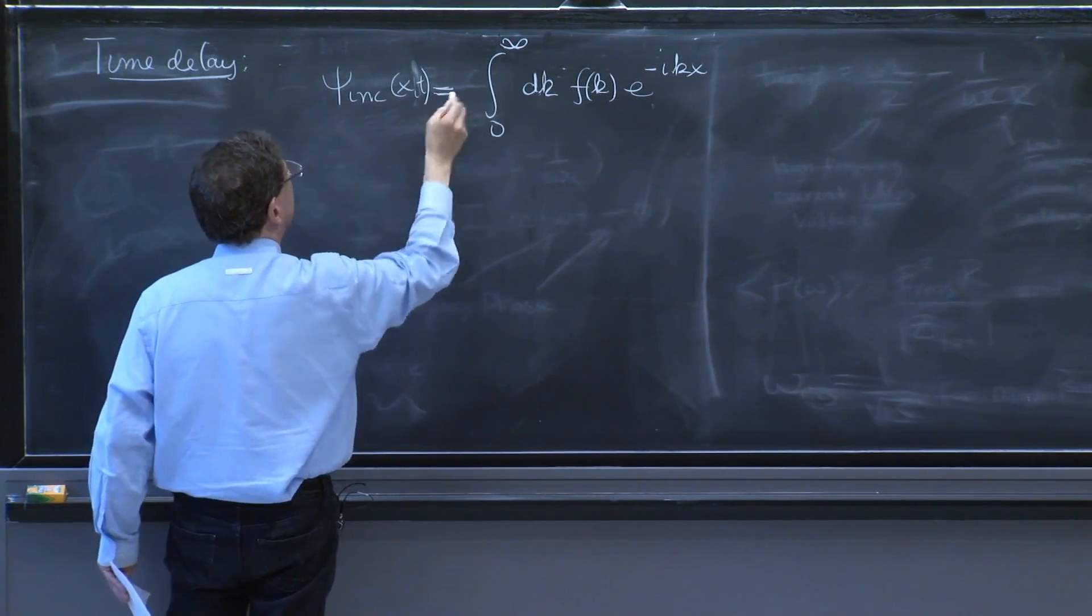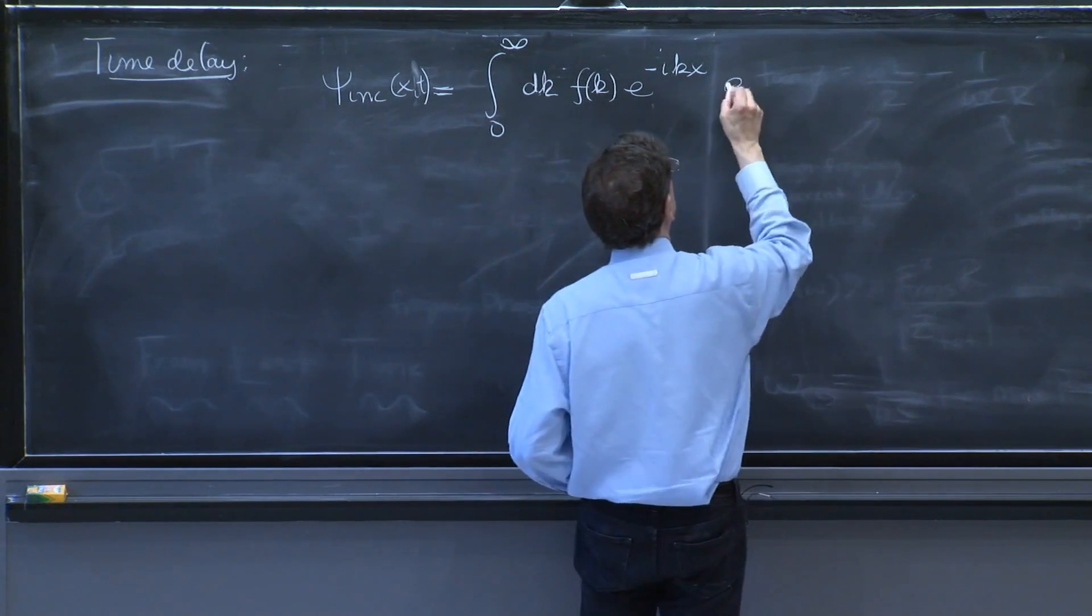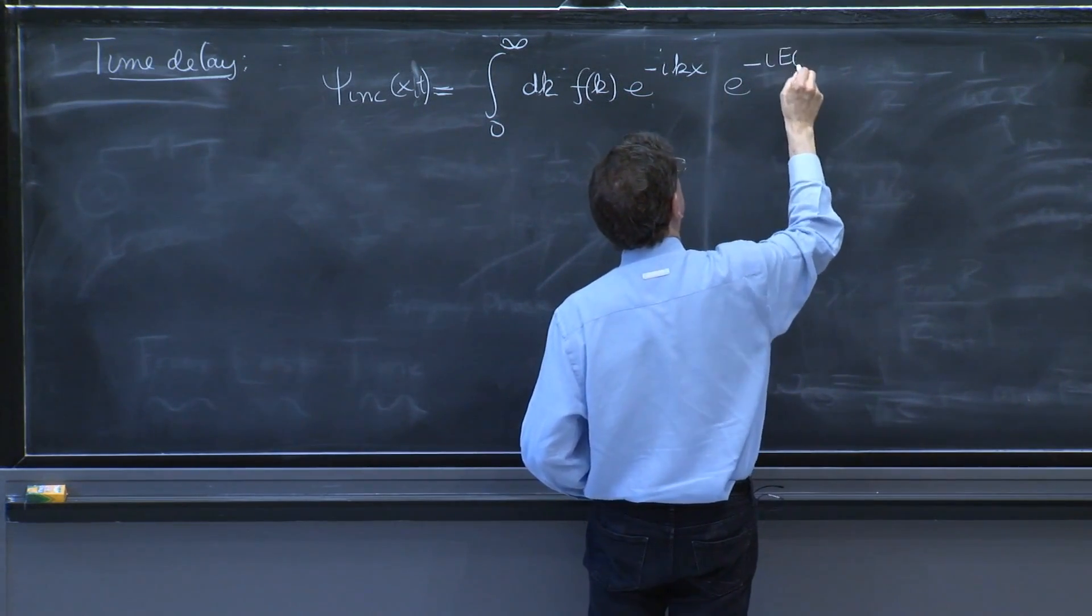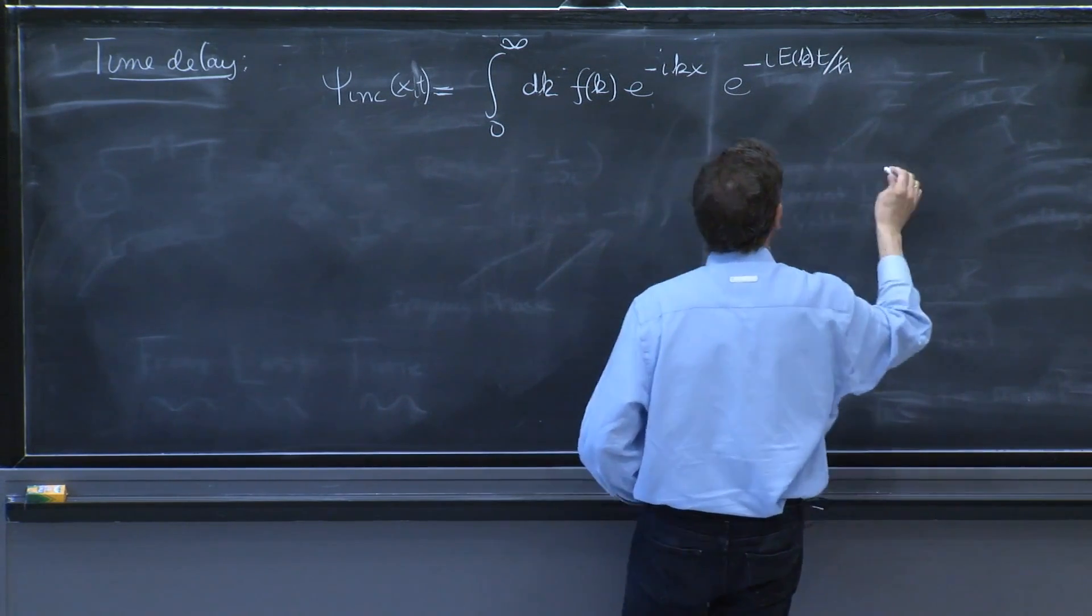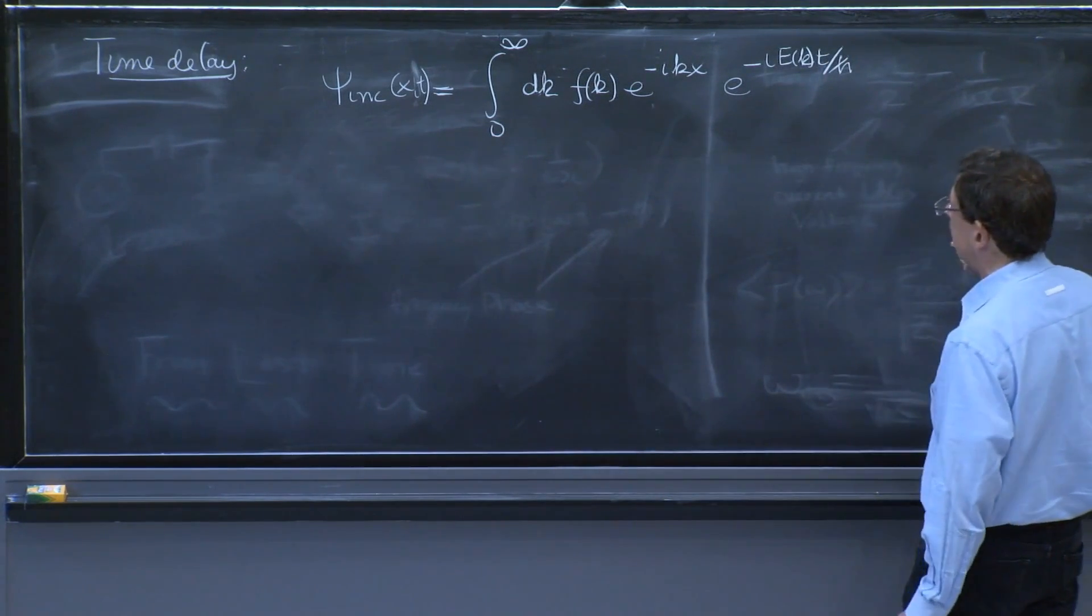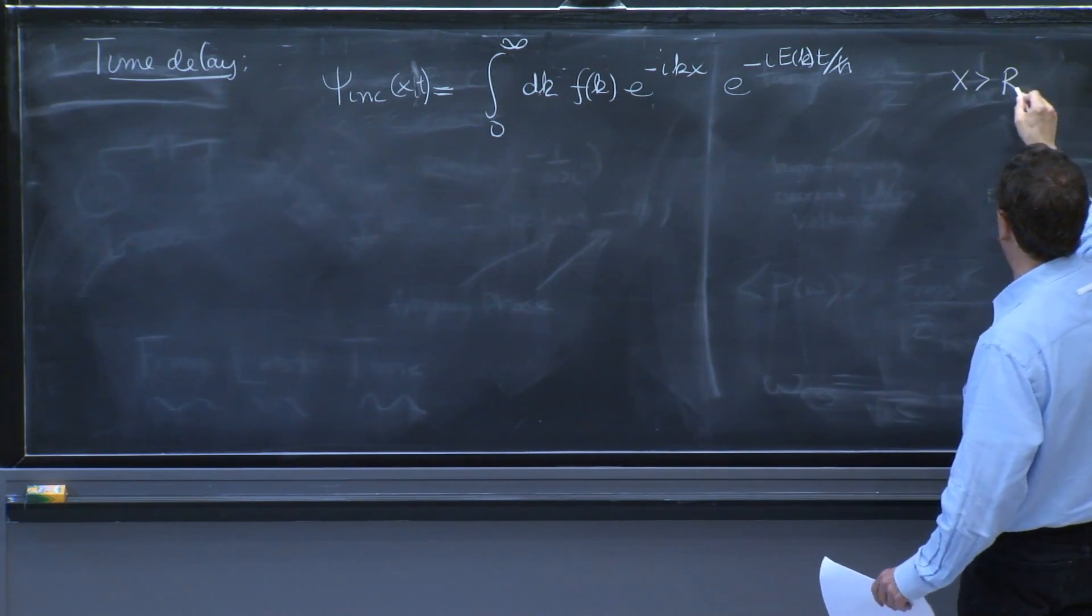I'll actually add the time dependence as well. So let's do phi of x and t. Then we would have e to the minus i, e of k, t over h bar.